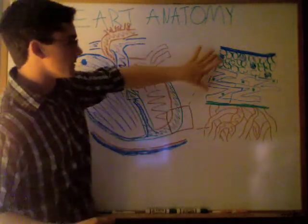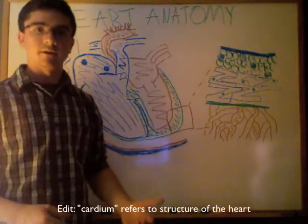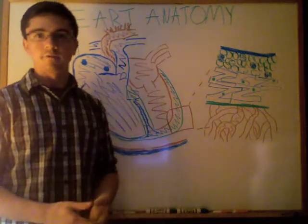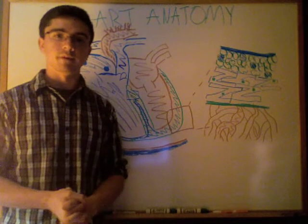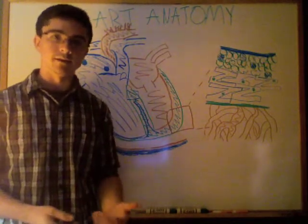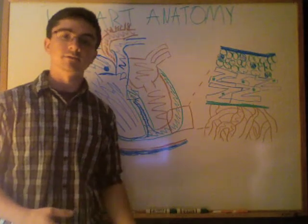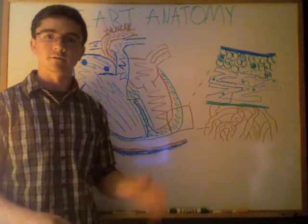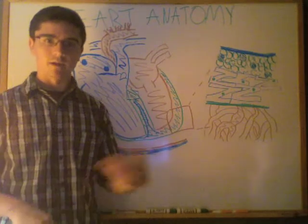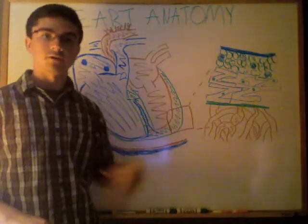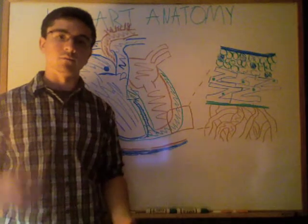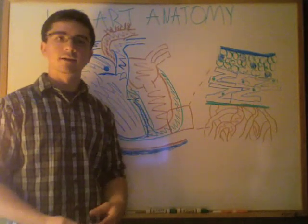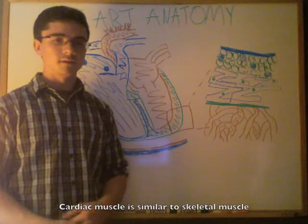Deep to the epicardium we have the myocardium. Myo means muscle, cardium means membrane — so myocardium is cardiac muscle. The myocardium is striated and arranged in syncytium, which is going to be beneficial to the electrical conductivity of the heart and helps the heart contract blood more efficiently so it can better circulate blood throughout the body. Cardiac muscle fibers are involuntary and striated, arranged in syncytium.